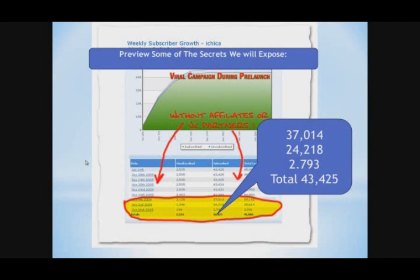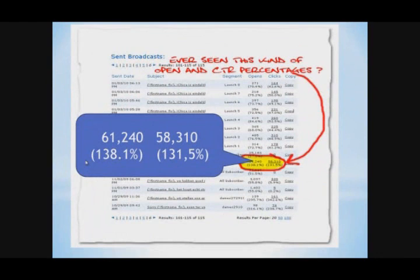Let's preview some of the secrets we will expose. As you can see, this autoresponder account has grown immensely in the months of November and October, to a total of 43,425 subscribers. And look at the click-through rates and the open percentages. Out of 61,000 opens, we had a 138% response rate, and 58,000 of those people clicked through the link to the sales page.